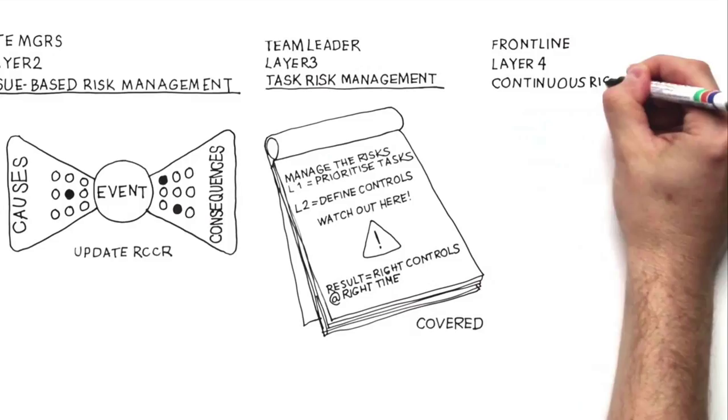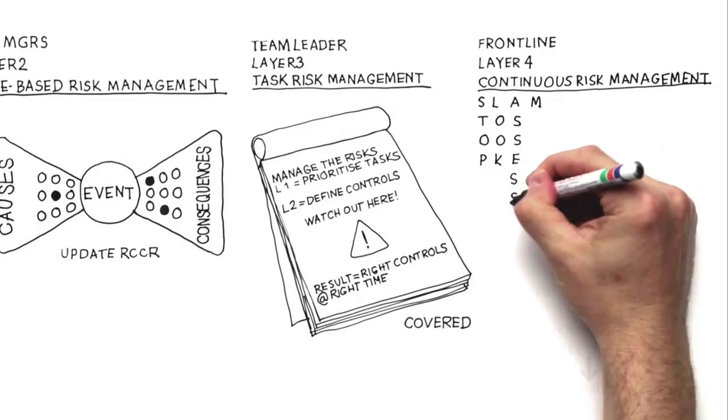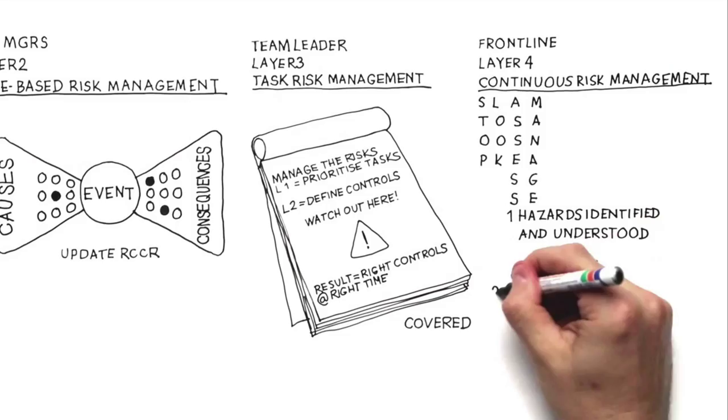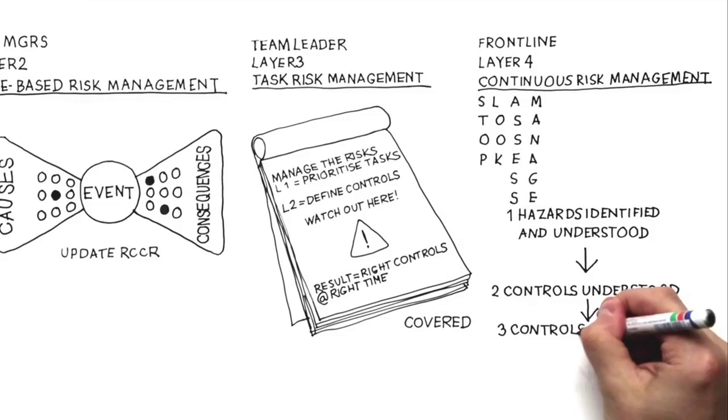Now you as the site leader can make sure of three things. One, that the hazards where people are working are identified and understood. Two, that people understand the controls that manage those risks. And three, that those controls are being executed correctly. Everyone's safe and productive.